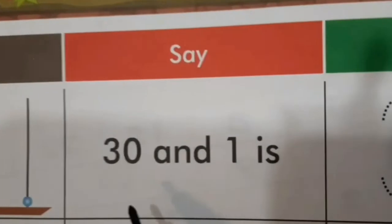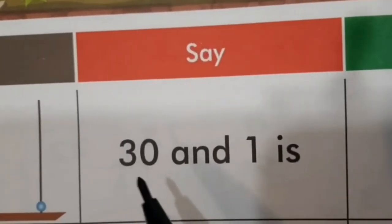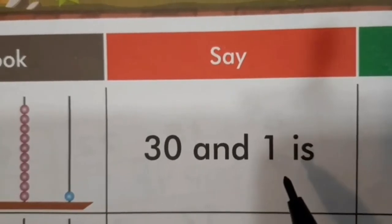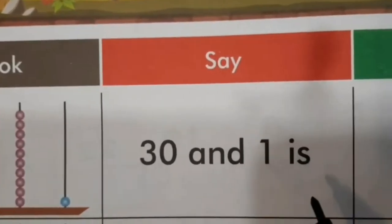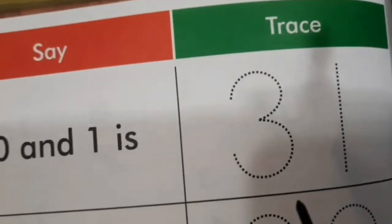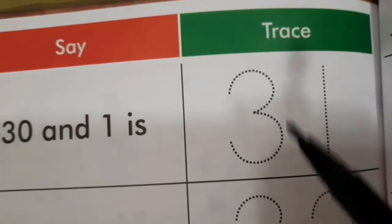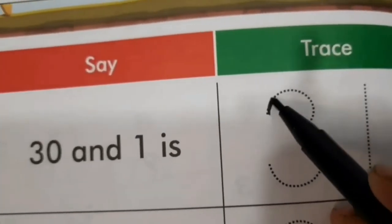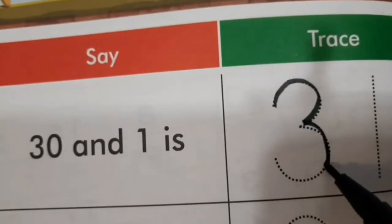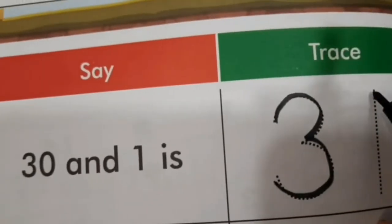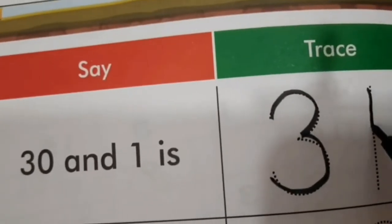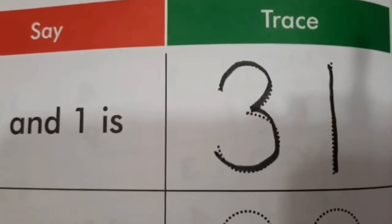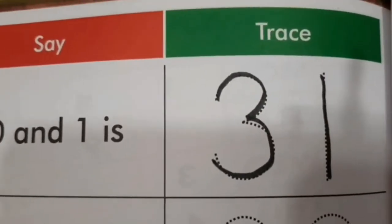So, we will say 3, 0 — 30 and 1 — that is 3, 1 — 31. So, we will be tracing the number 3, 1, 31. Aap logo ne trace kiya, baccho. Very good.